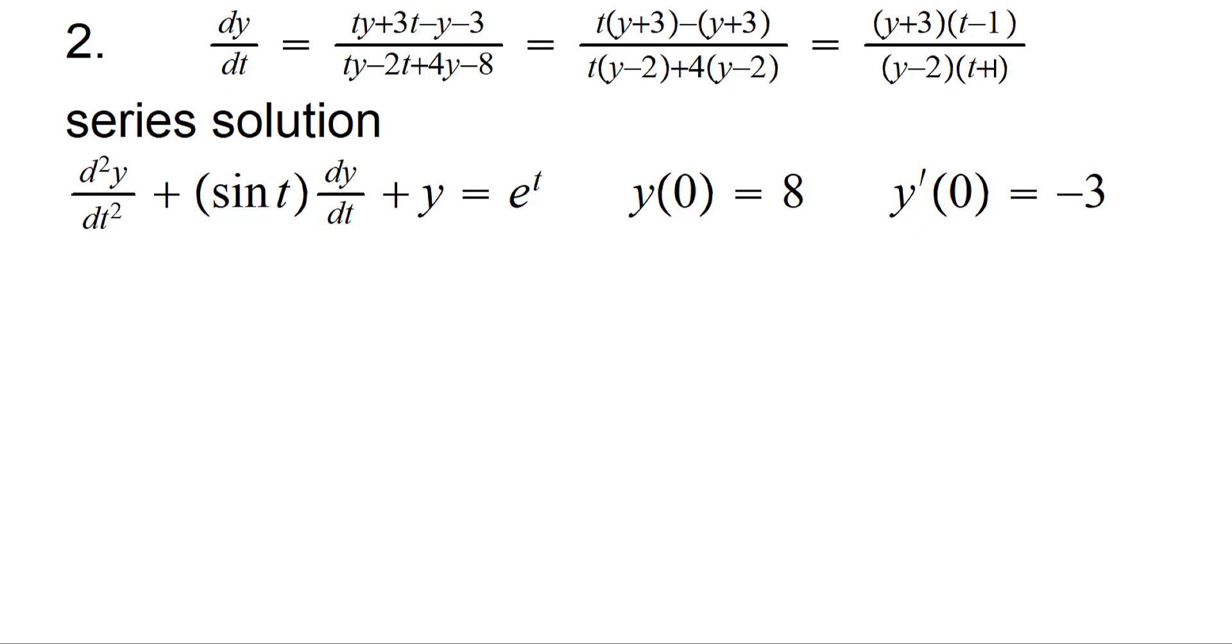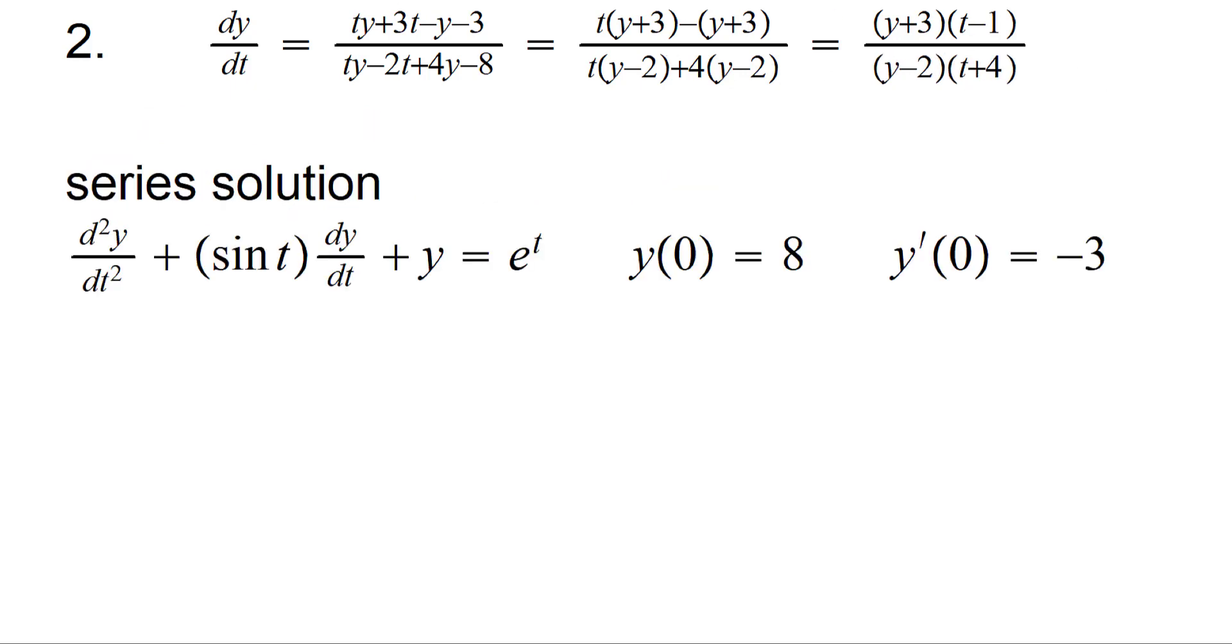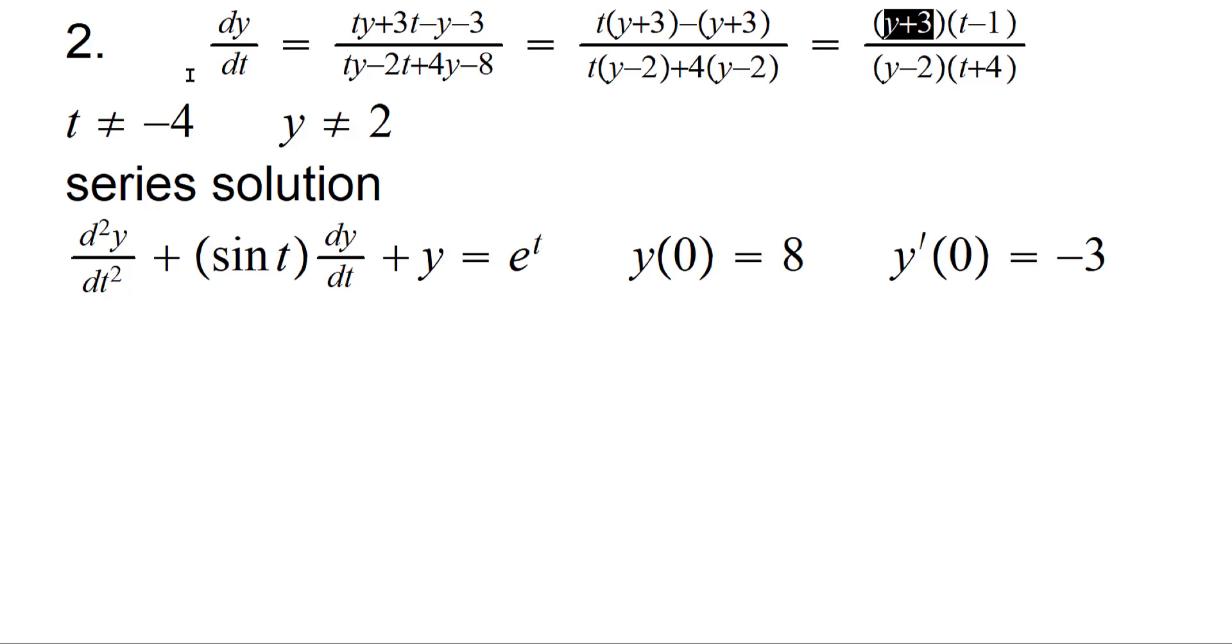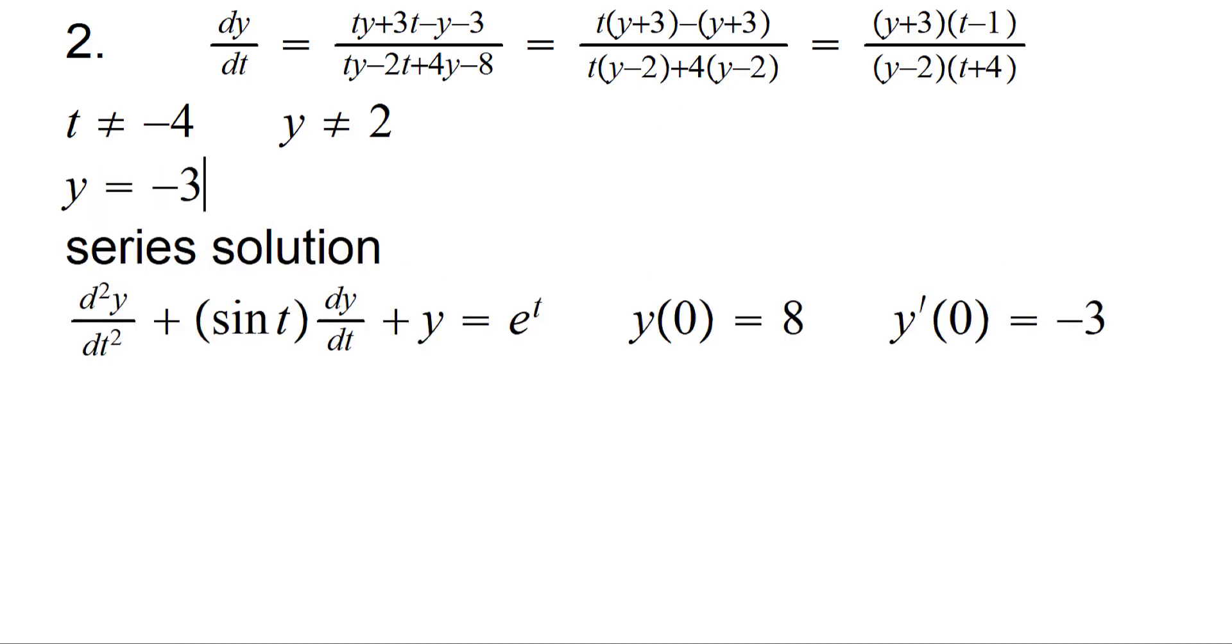So if you go ahead and finish the factoring, what do you get? You will get y plus 3 times t minus 1. And then y minus 2 times t plus 4. So here you can see that, I mean, we will go to MATLAB in a moment, that we can't have t equals negative 4. We can't have y equals 2. And at the same time, if this is 0, then you can see dy/dt, like if y equals negative 3, then what will happen? dy/dt will be 0 and this expression will be 0 as well. So y equals negative 3, that's a trivial solution.